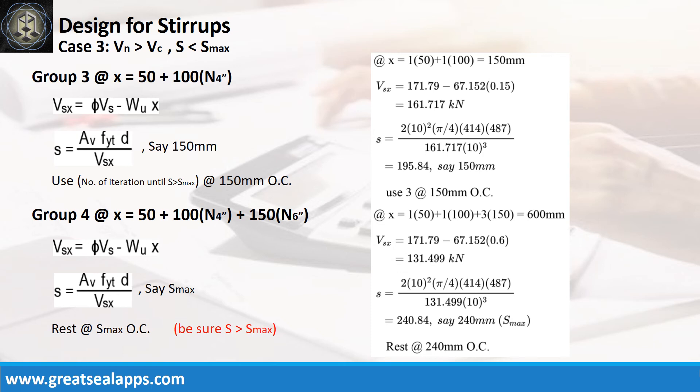For group 4 at x equals 600 mm, the web strength at x equals 600 mm is 131.499 kN, with spacing at 240.84 mm, use rest at 240 mm.